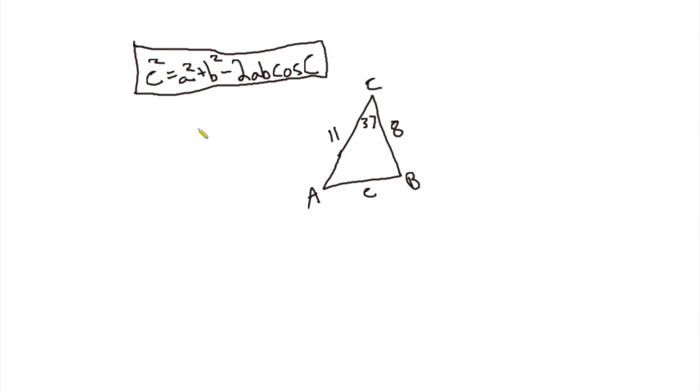So let's solve this. Here we see the formula is c squared equals side a squared plus side b squared minus 2 times side a times side b times cosine angle c. So again, the lowercase letters represent the sides, and the uppercase letters represent the angles.